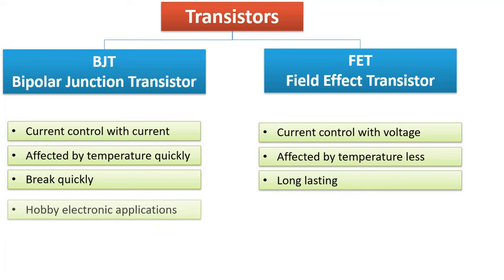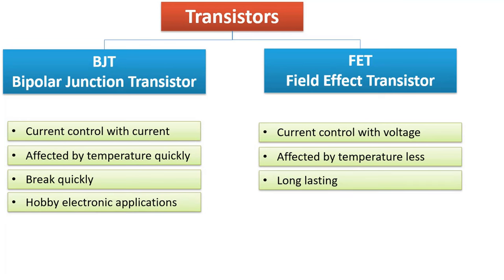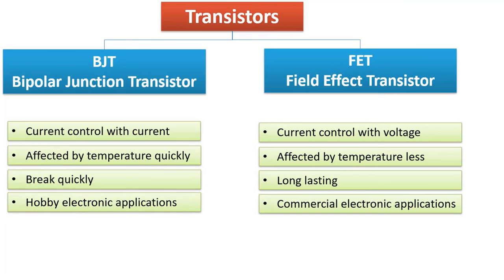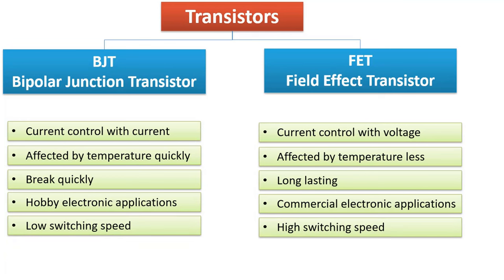Therefore, BJTs are generally preferred in low-circuit hobby electronic applications, while FETs are mostly preferred in low-voltage commercial applications. Also, BJTs have a low switching speed, while FETs have a high switching speed.